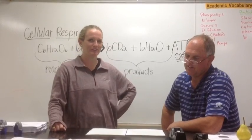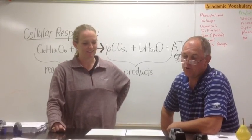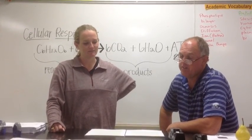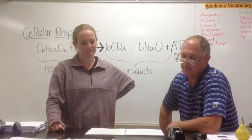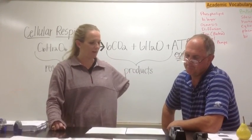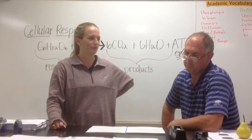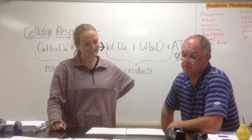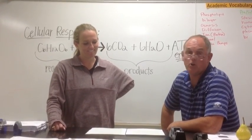We just finished talking about photosynthesis. We discussed how the chloroplast of a plant takes in radiant energy from the sun. The radiant energy is converted into chemical energy in the form of glucose. Glucose is a sugar, which makes it a carbohydrate.